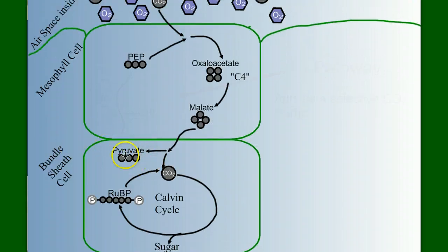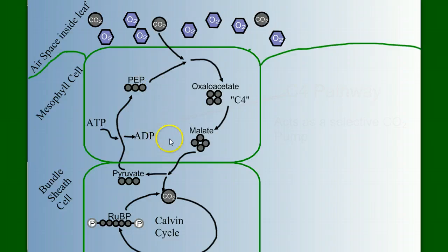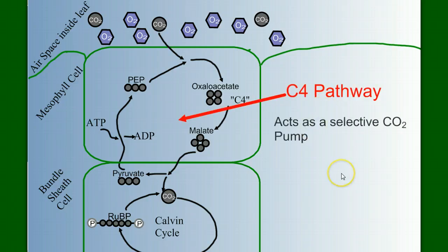If I come back up here, the pyruvate that we have here diffuses back into the mesophyll cells, and with a little help from ATP, it gets converted back to PEP. So look at what's happening here. This top cell, we have two different cells involved in one metabolic pathway. The C4 pathway, basically, is a selective carbon dioxide pump. Even though there's a lot of oxygen and only a very little bit of carbon dioxide, it's going to ensure that that little bit of carbon dioxide that's here gets to the Calvin cycle. And it keeps oxygen away from RuBP, and it keeps photorespiration from occurring.